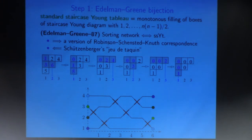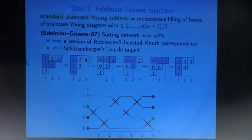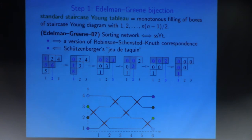That's a Young Diagram, and you fill it with integers from 1 to n in a monotonous way — the numbers grow strictly along both the rows and columns. You fill with numbers from 1 to n, where n is the total number of boxes, so all numbers appear exactly once and are strictly increasing along rows and columns. That's what is called a Staircase Young Tableau. There are finitely many of these Young Tableaux, and it turns out their number is precisely the same as the number of sorting networks — that was already proved by Stanley.